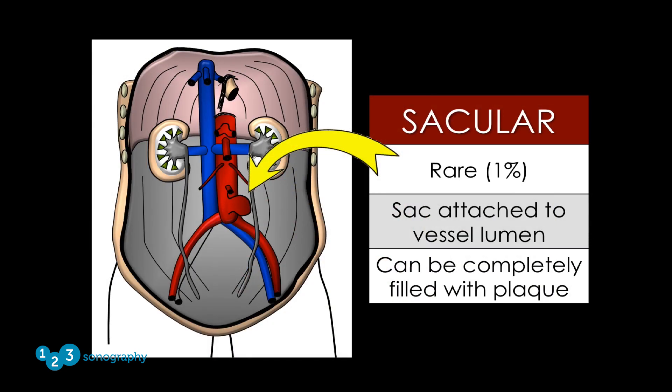The second type of abdominal aortic aneurysm is a saccular aneurysm. This type is much less common, making up around one percent of all abdominal aortic aneurysms. It is formed by a bleb that expands out from the functional lumen and remains attached by a channel. Plaque and/or thrombus can partially or completely fill the aneurysmal sac.